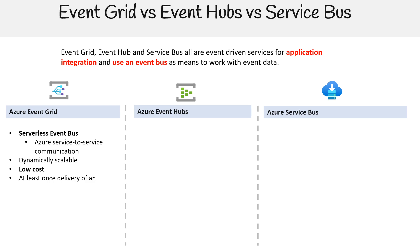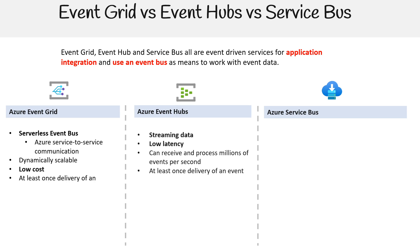For Event Hubs, this is streaming data. You get low latency and can receive and process millions of events per second, with at-least-once delivery of an event. Because of the nature of streaming, it is generally more expensive than traditional things like a queue or a pub/sub.